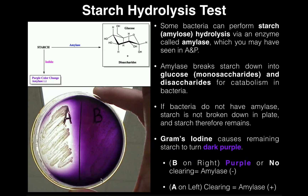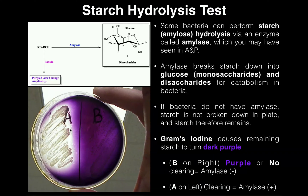We can see on the right side, pretty much all of it is purple for this species. But over on the left side for A, there are areas — particularly around the smear — where there's no purple. In fact, you can see directly through the plate.